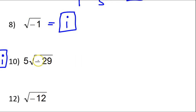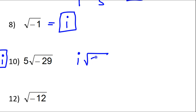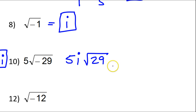As soon as you see that negative under the radical, you know that's going to be i. 29 is a prime number, so we're going to still have the square root of 29. So it's simply going to be 5i radical 29. Notice where the i goes — in between the regular number and the radical.